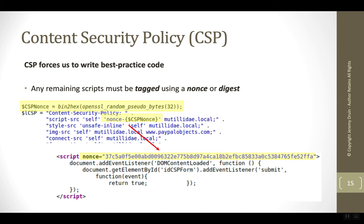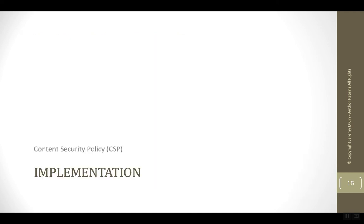One method is to use a nonce — a number used once — to mark the good code and keep it from getting blocked. There's also another method where we can take a digest or hash of the code and include the hash. In the next part, we'll take a look at implementing content security policy.